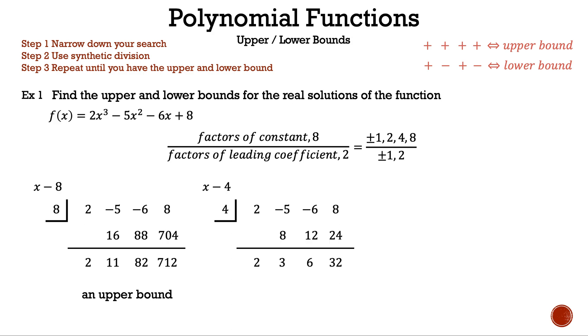Now let's pick 4, which is in the middle. Our result is an upper bound because all the numbers on bottom are positive. Let's take a closer look at the numbers: 2, 3, 6, 32. The 32 tells us that we're close to finding the least upper bound.